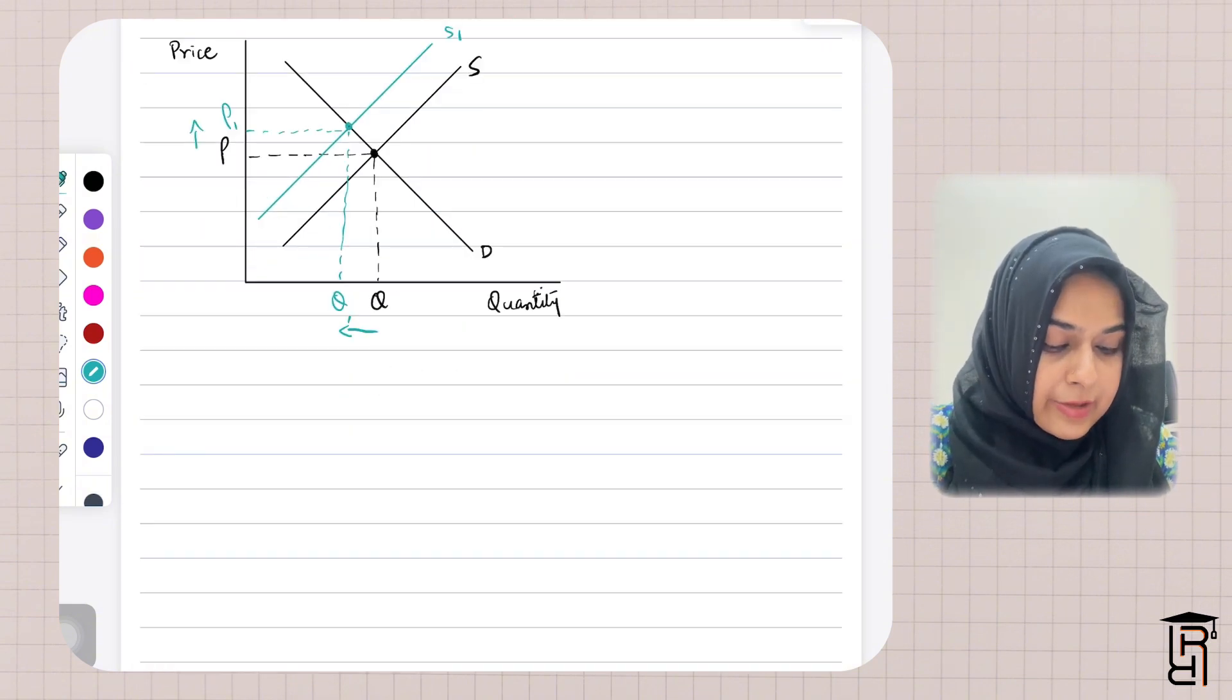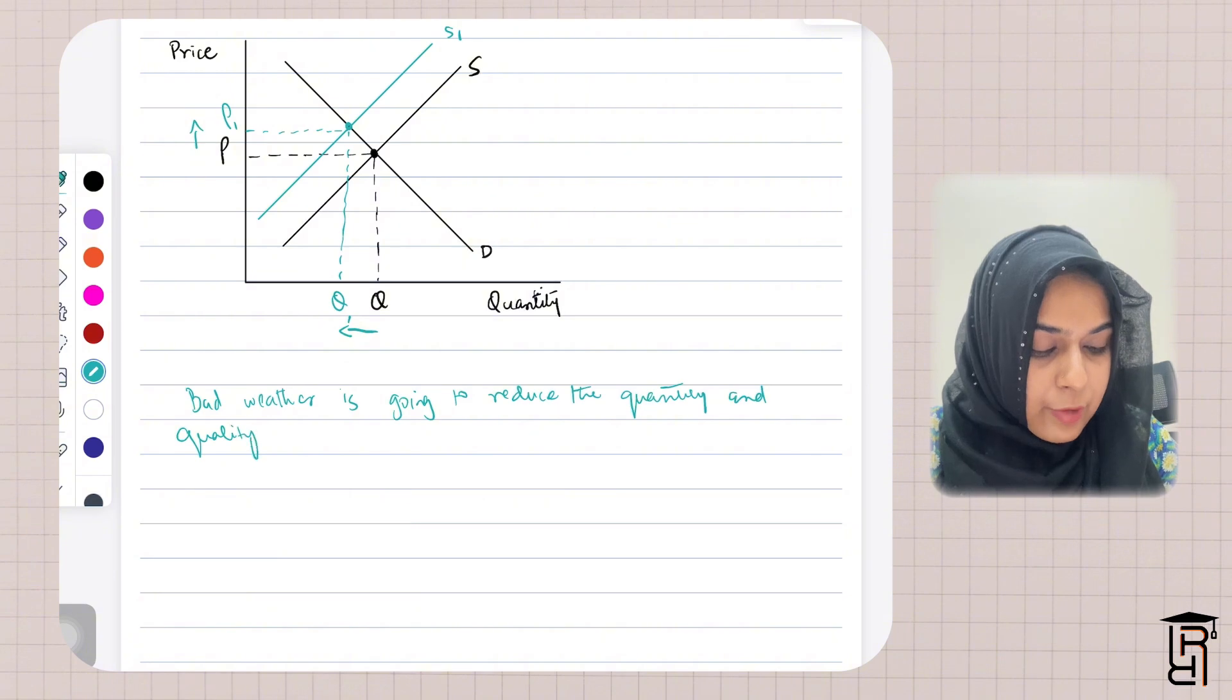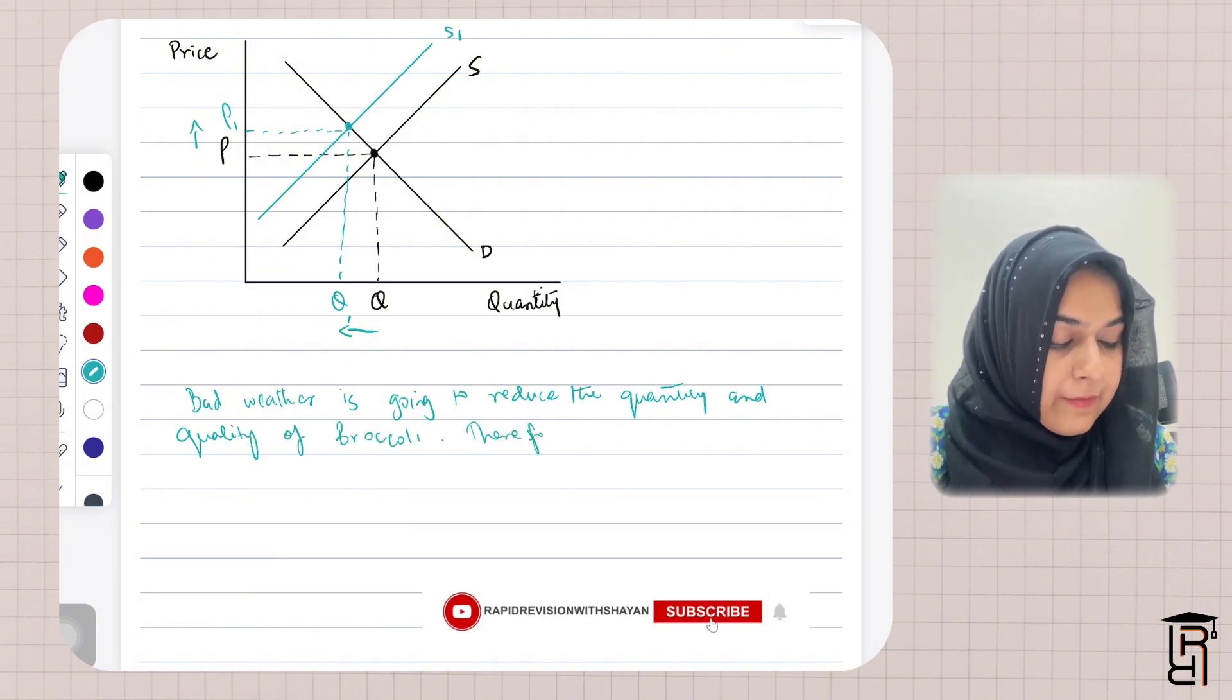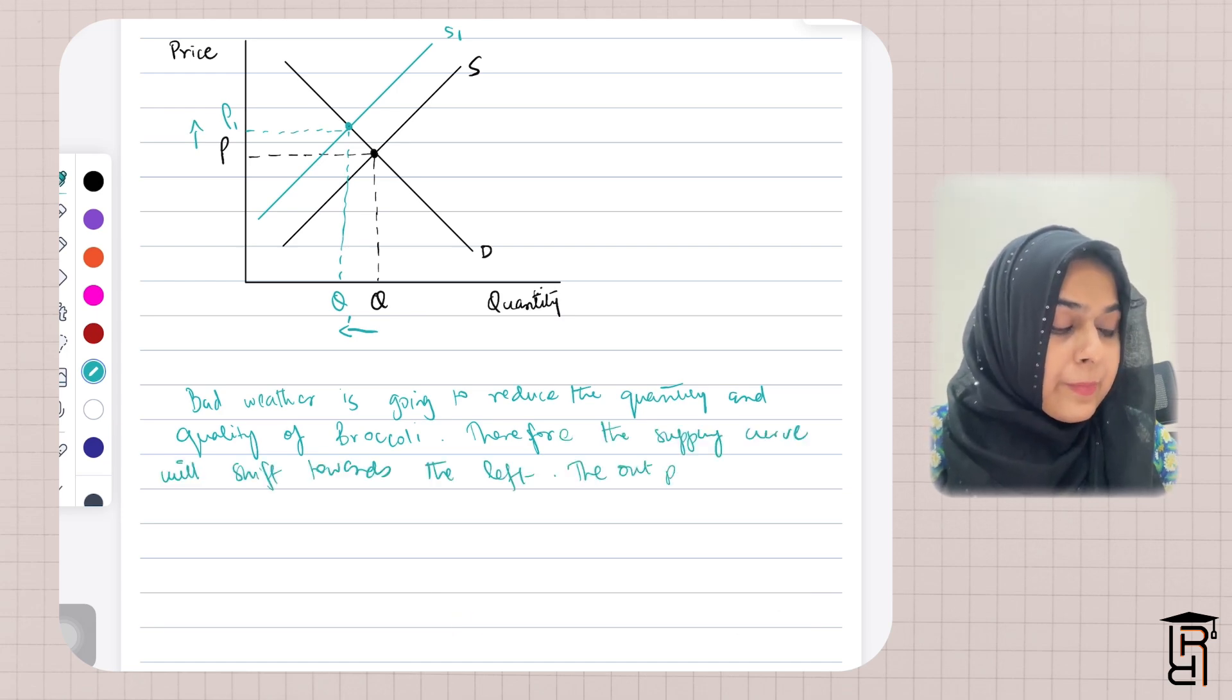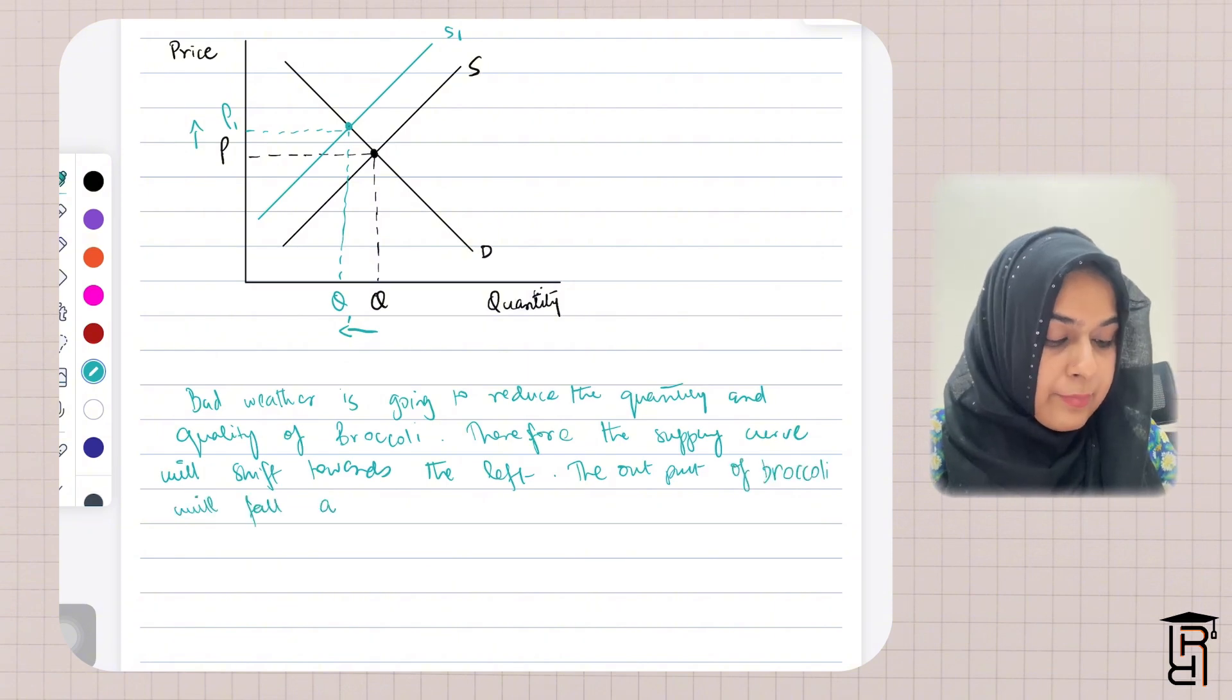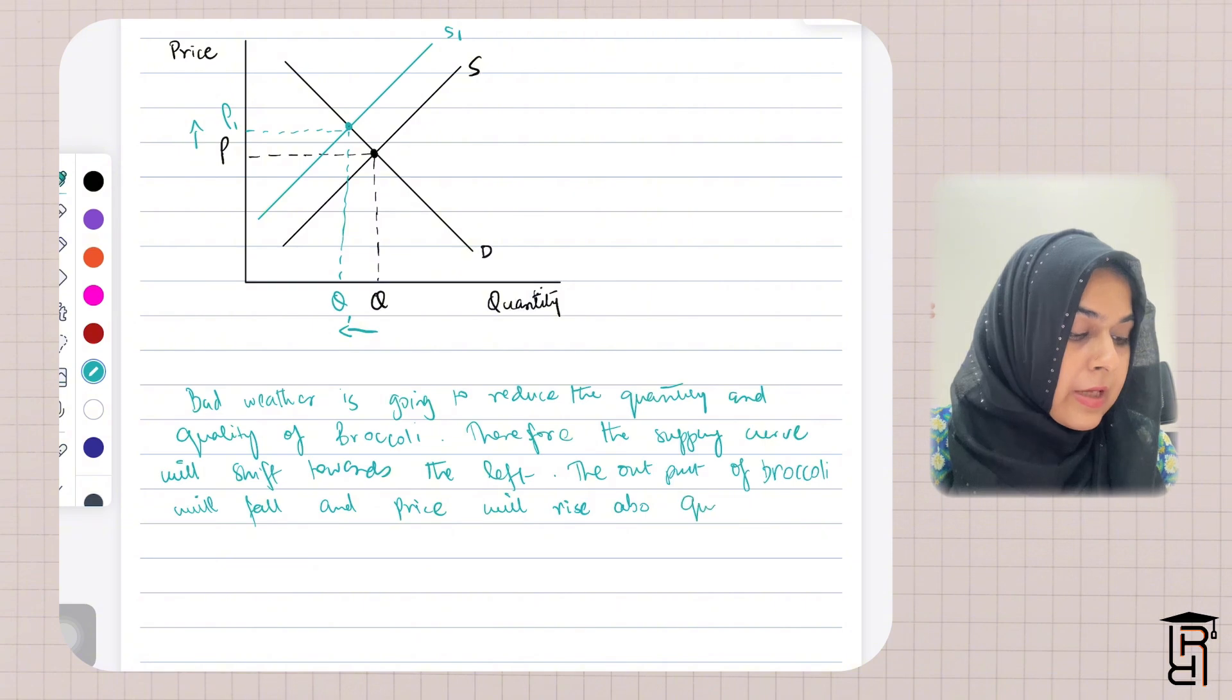What you guys need to write here is that bad weather is going to reduce the quantity and quality of broccoli. Therefore, the supply curve will shift towards the left. The output of broccoli will fall, and price will rise.